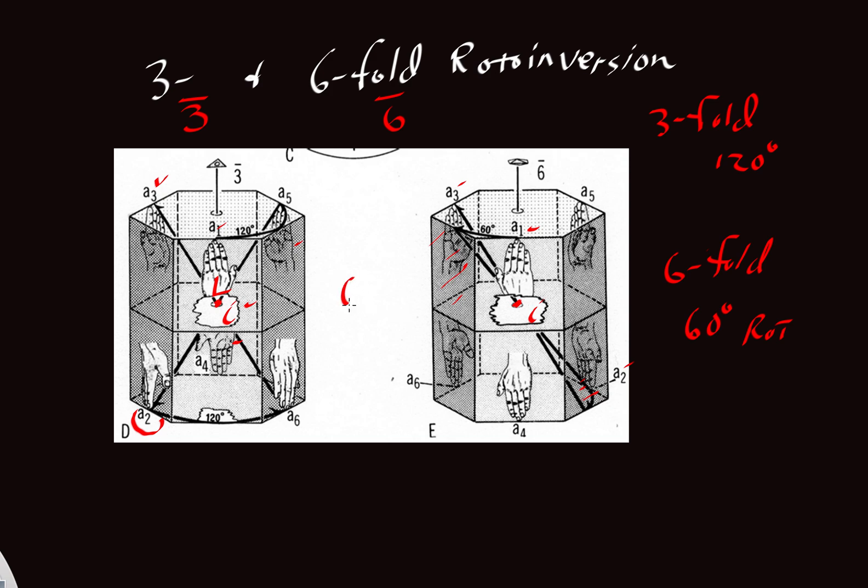Notice that we get six motifs in both of these cases, both the bar three and the bar six. But we generate them in a slightly different way. So in these instruction sets, bar three or bar six, when we give you that kind of instruction, when anybody gives you that kind of instruction, that means you're going to create these kinds of patterns in this kind of order.